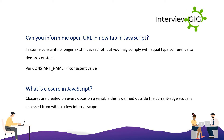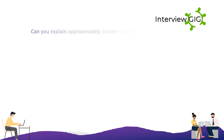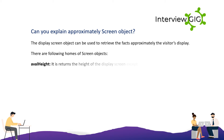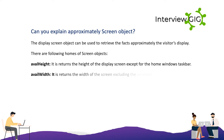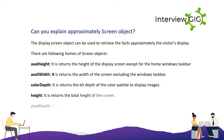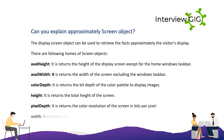Can you explain the screen object? The screen object can be used to retrieve information about the visitor's display. The properties of the screen object are: availHeight — returns the height of the screen excluding the Windows taskbar; colorDepth — returns the bit depth of the color palette for displaying images; height — returns the total height of the screen; pixelDepth — returns the color resolution in bits per pixel; width — returns the total width of the screen.